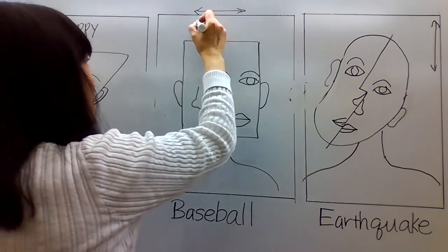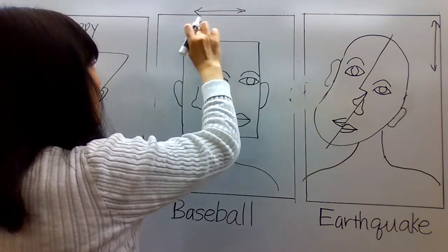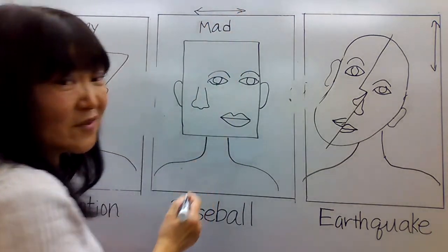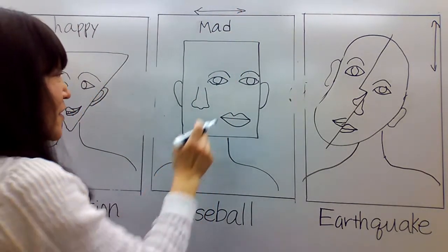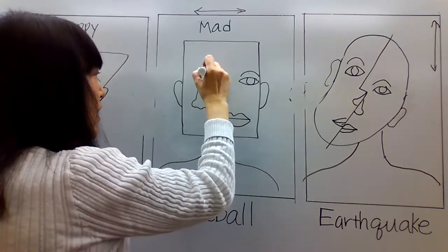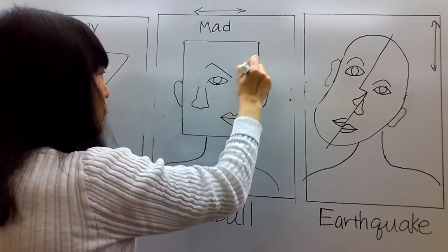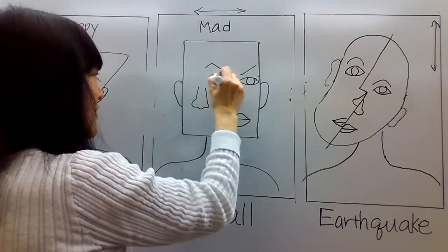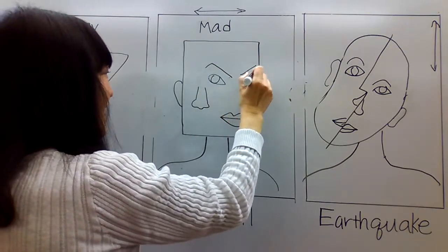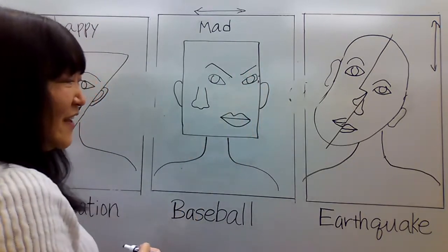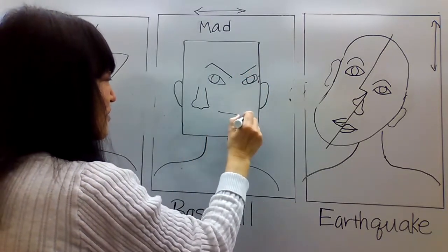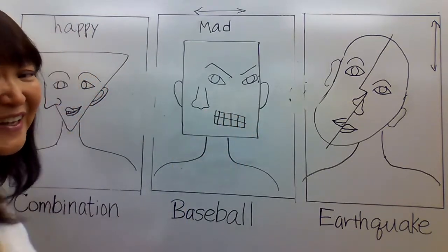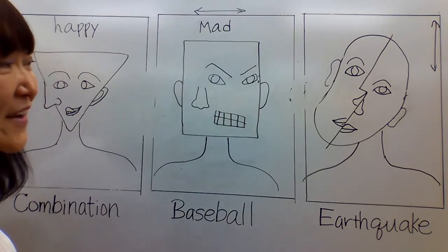For this guy, I'm going to make him mad. When you're mad, your eyebrows go like this — angled down. Your eyes go like that. And your lips go like that. Now he looks really mad.